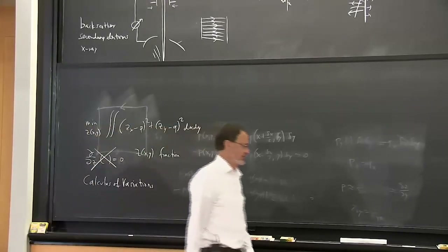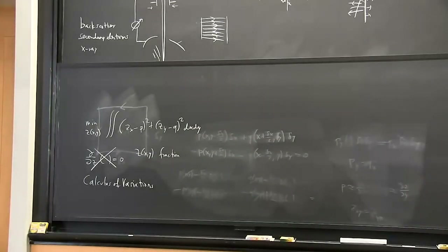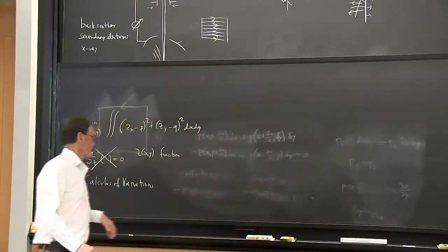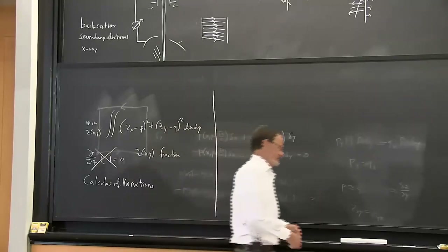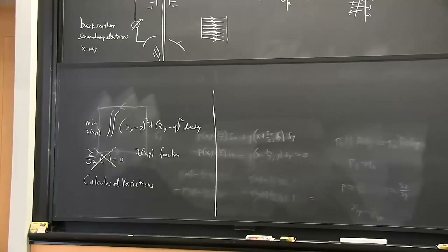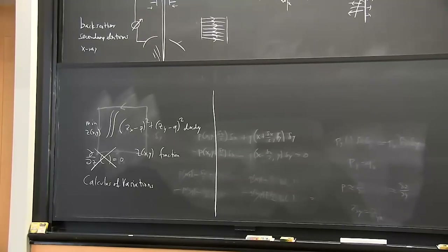Calculus of variations says: suppose that Z is the solution, then if I make any small variation on Z, that integral should go up. Based on that very sensible idea, you can come up with equations for solving that problem. But we're going to remain in the trenches and work with the discrete version, because this particular problem is pretty simple, and working through it in detail reveals a lot of pitfalls you might run into when solving a more complicated problem.